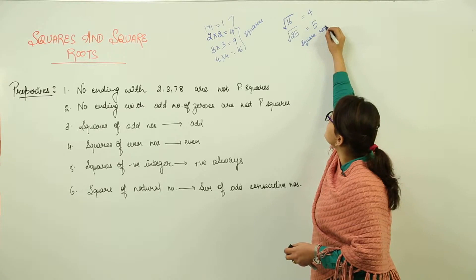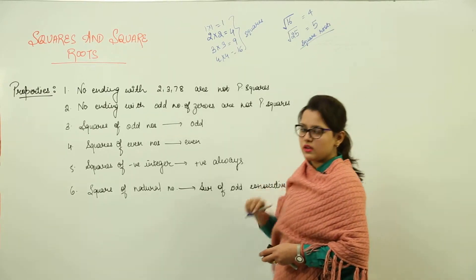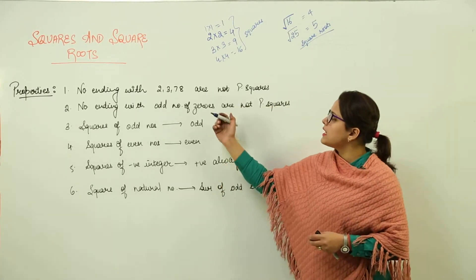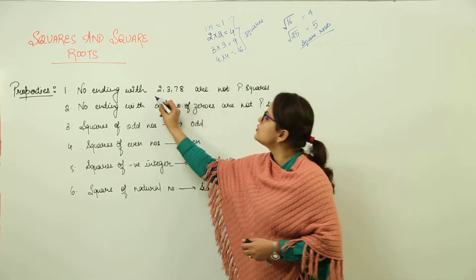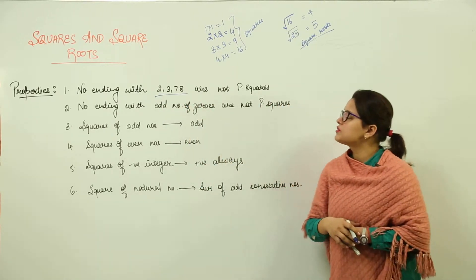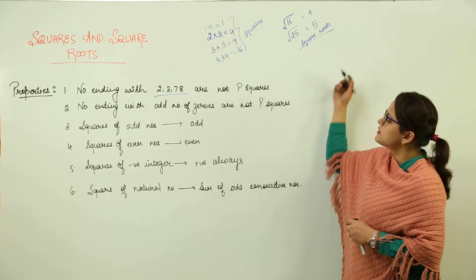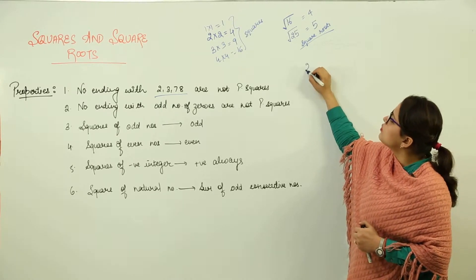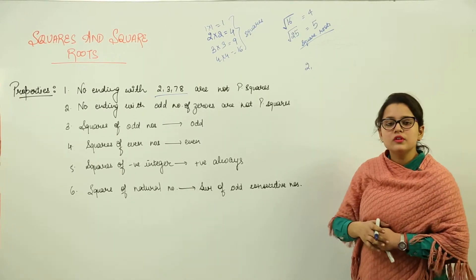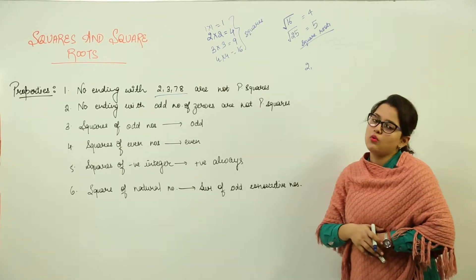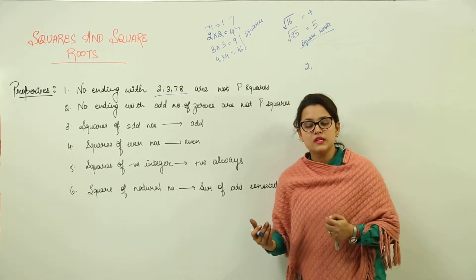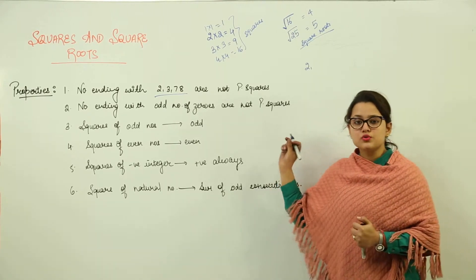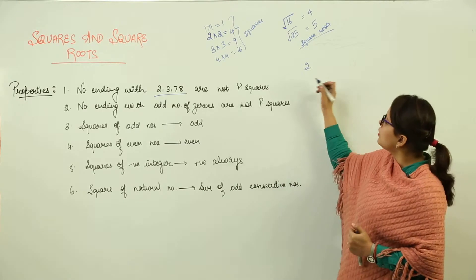Now let us discuss some properties of squares and square roots. The first property says that numbers ending with 2, 3, 7, or 8 are not perfect squares. Let us take an example — take the number 2. Is it a perfect square? No, we don't know any two numbers by multiplying which we get 2.